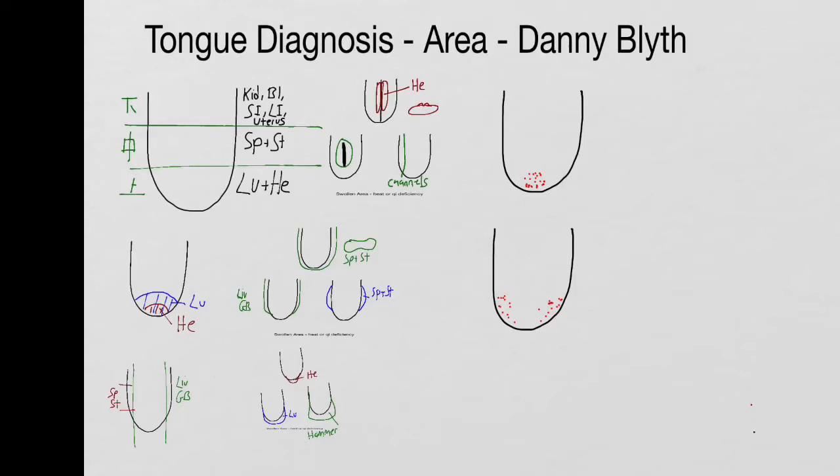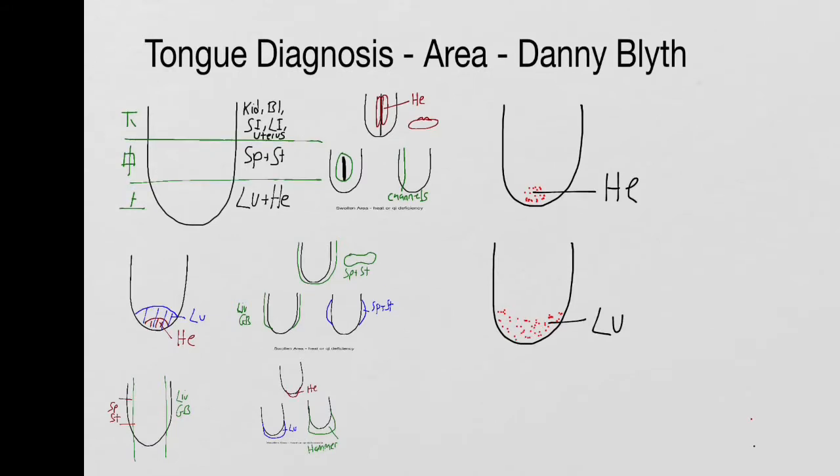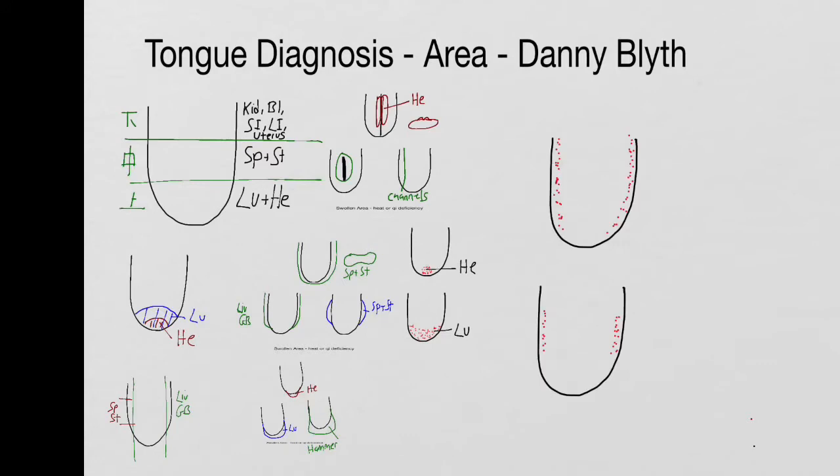So with red spots or points, if you get them on the very tip, that's the heart. If you get them either on the sides of the tip or over the whole front, that's the lungs. Otherwise, if you get points or spots on the side of the tongue, this is the liver and gallbladder, usually liver heat. And if they're just on the centre of the sides, then this is the stomach and spleen, usually stomach heat or fire. Stomach heat can also be points around the centre of the tongue or chi level heat.